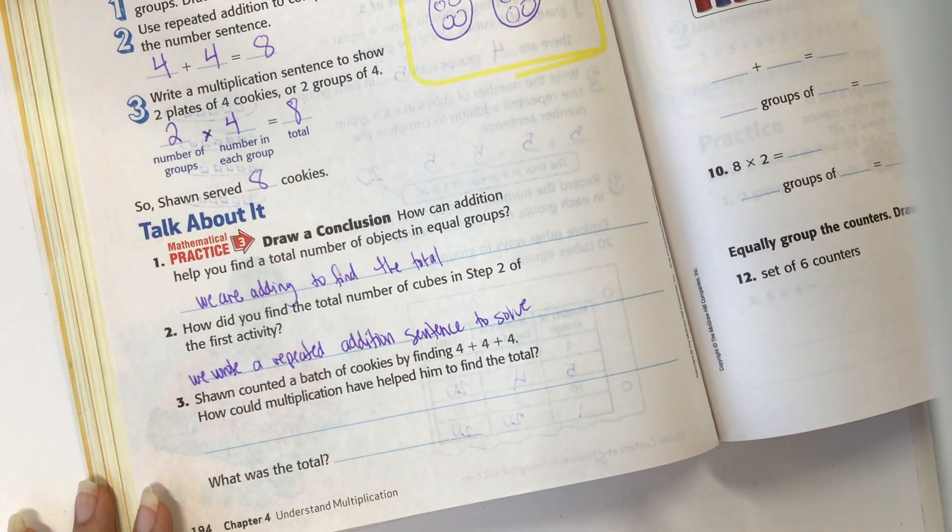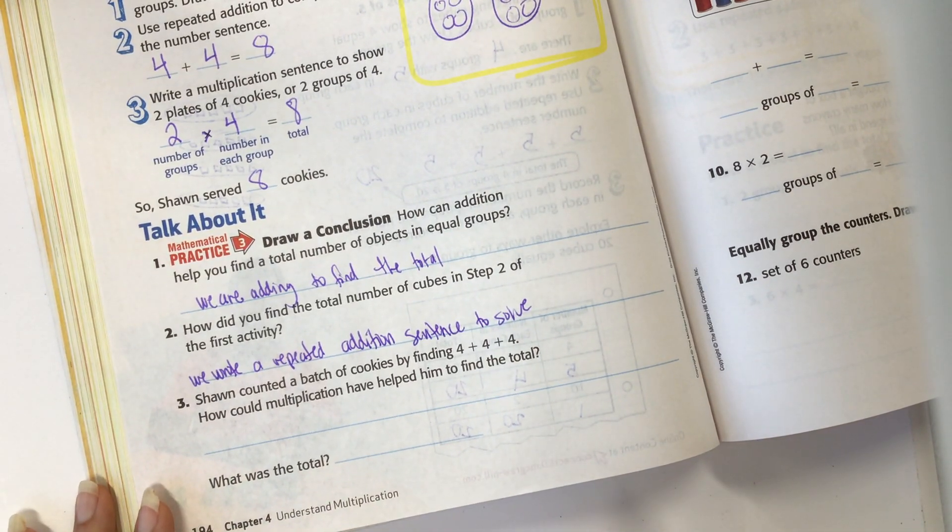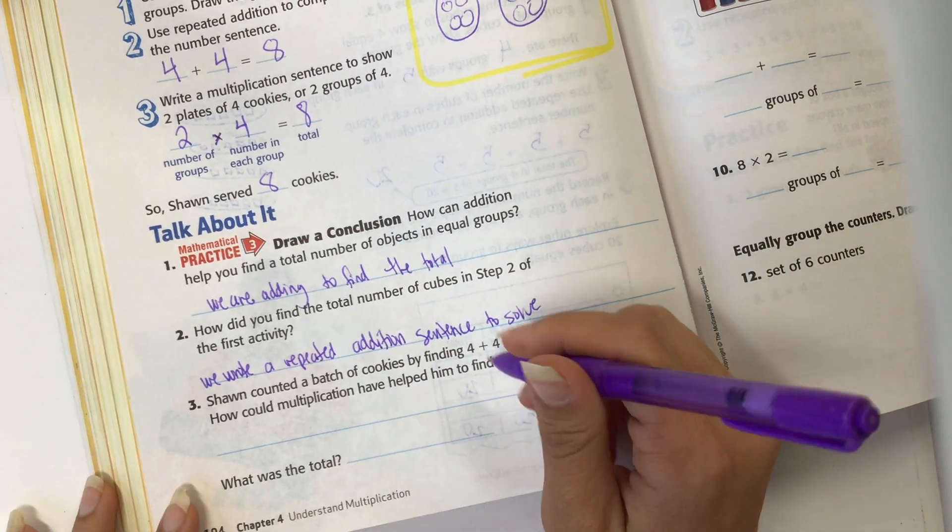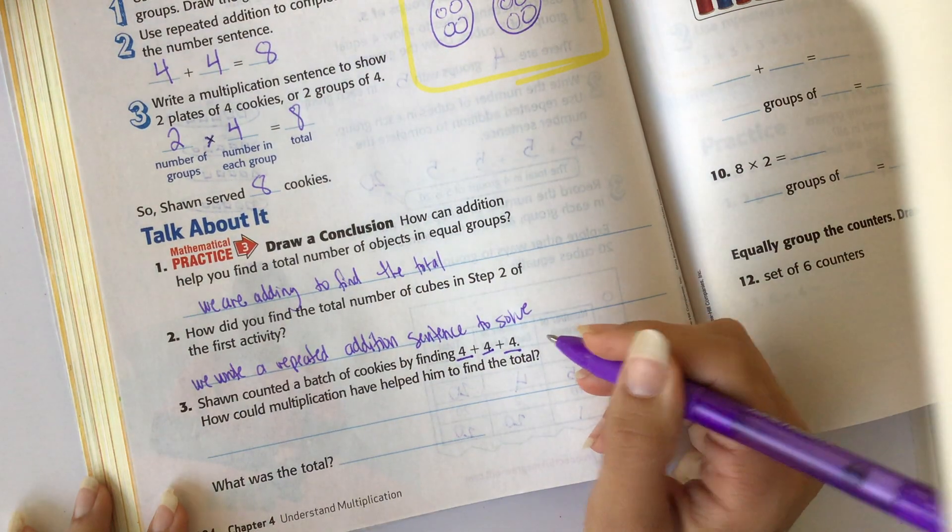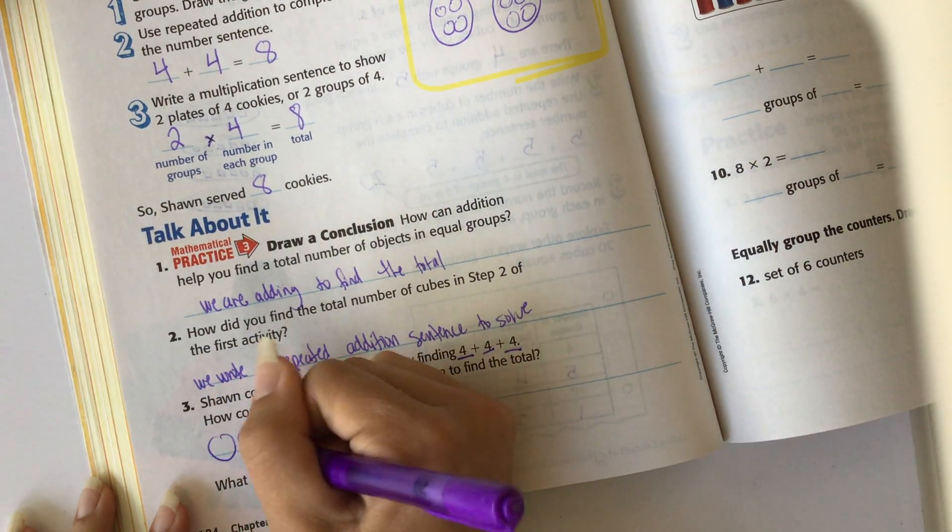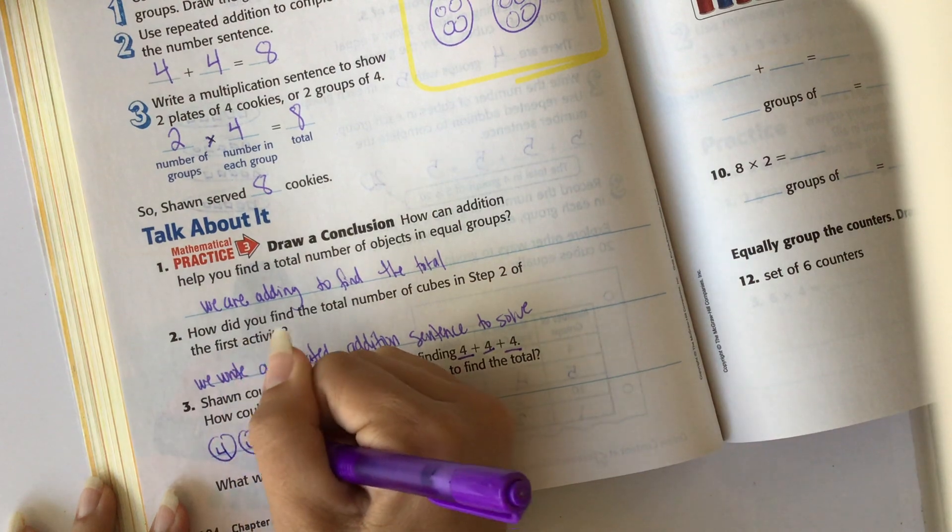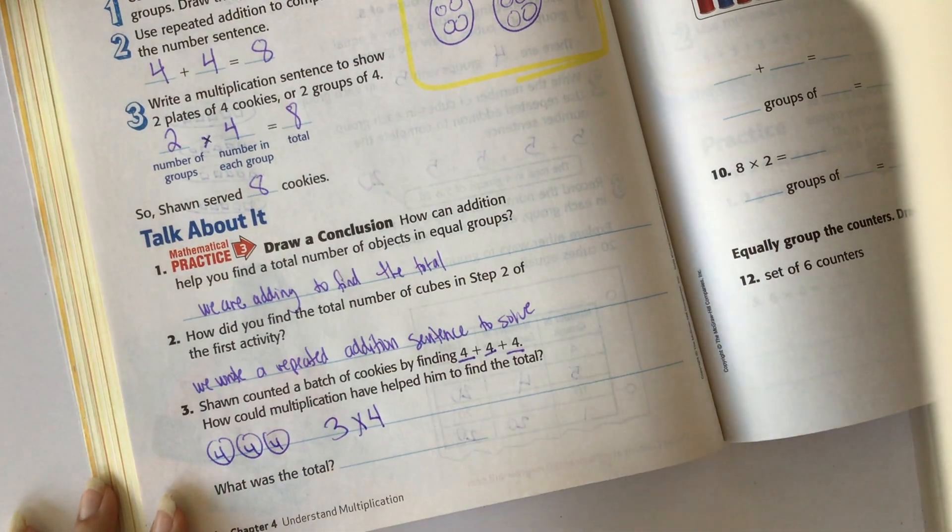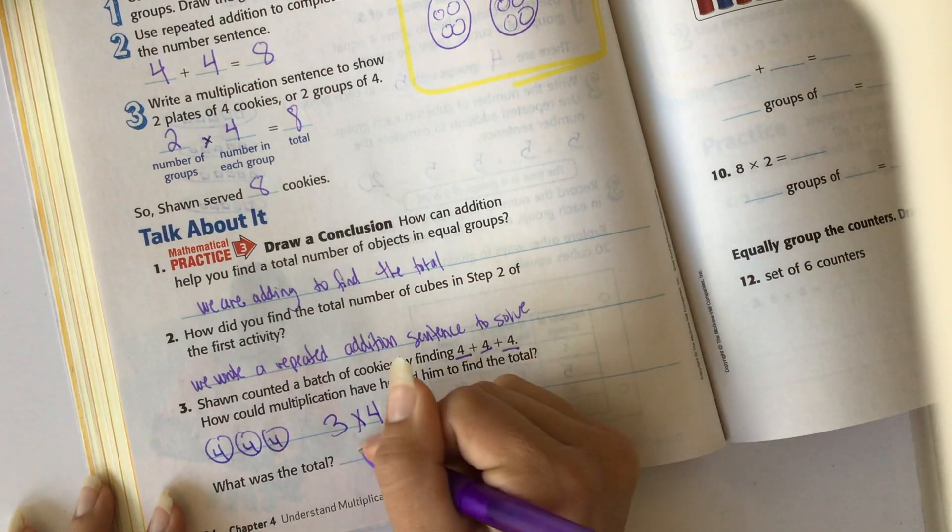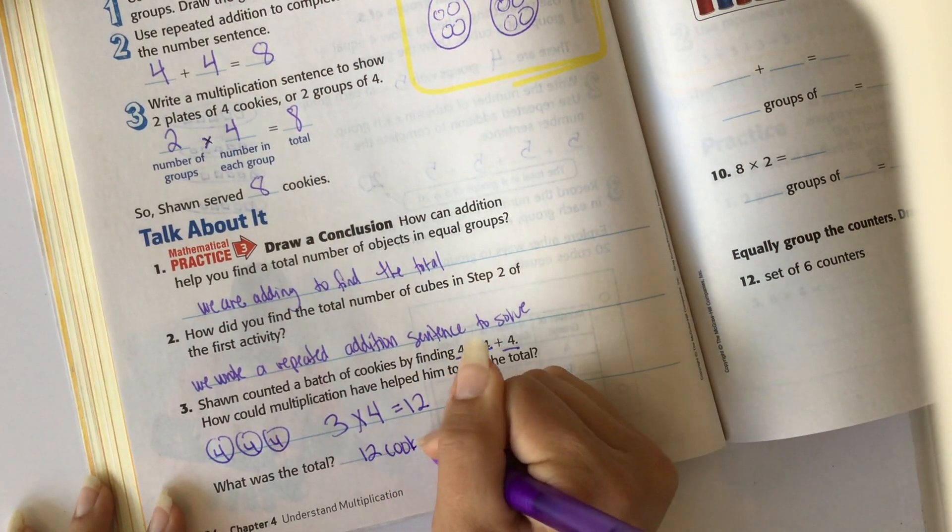Sean counted a batch of cookies by finding four plus four plus four. How could multiplication help him find the total? So if you see we have four plus four plus four. So maybe Sean made some more cookies. So now he has one, two, three groups of four. And three groups of four can be written like that, which would give us 12. So the total is 12 cookies.